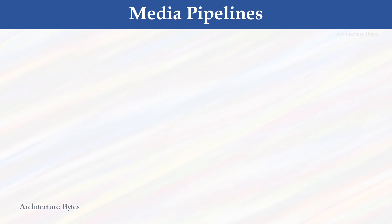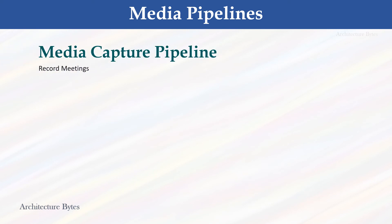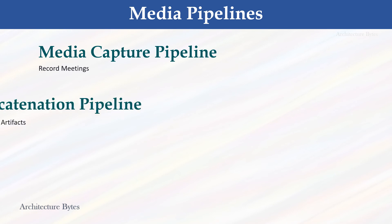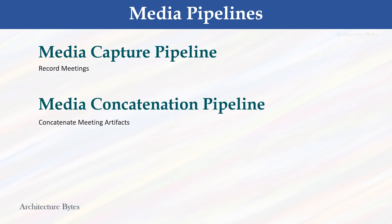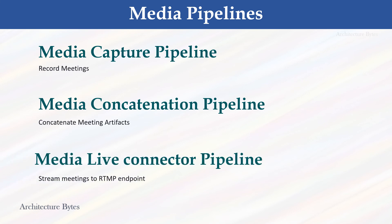Here are various kinds of media pipelines. A Media Capture Pipeline, as we just saw, can be used to record meetings — meeting artifacts are stored in small file chunks in an S3 bucket. A Media Concatenation Pipeline can concatenate these meeting artifacts. A Media Live Connector Pipeline enables you to stream Amazon Chime SDK meetings to an RTMP endpoint. In addition, each type of media pipeline can send lifecycle events to other Amazon services like EventBridge, SQS, and SNS, which you can use to trigger notifications and initiate downstream workflows.